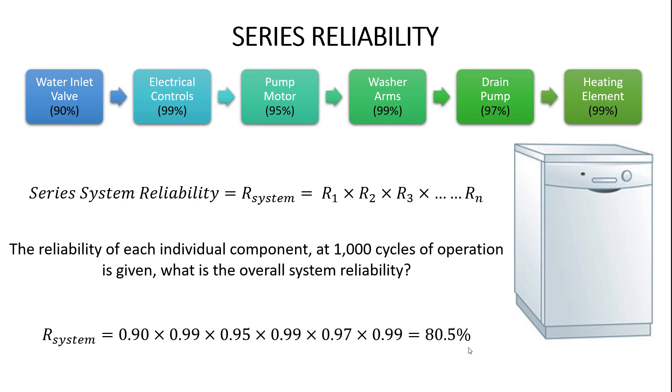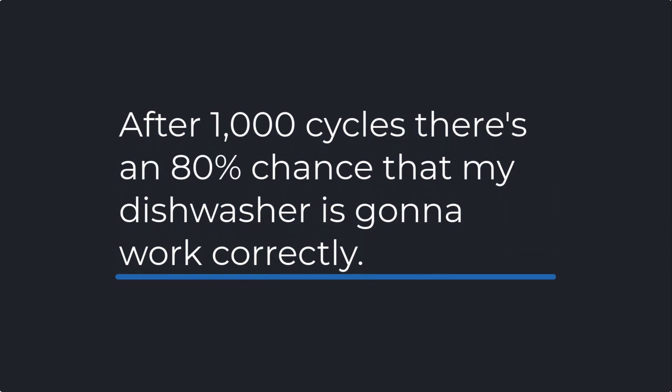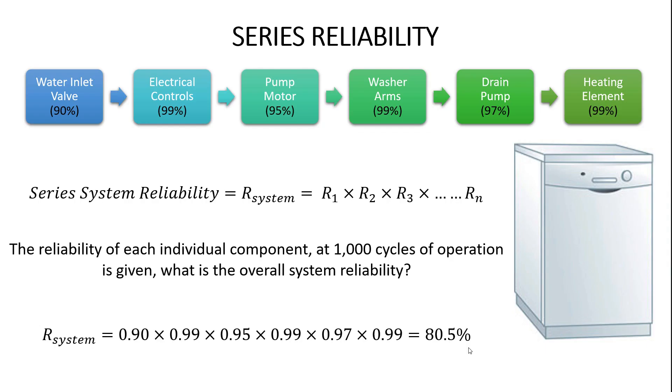And you can interpret that value in two ways. If you have a dishwasher at home, you can interpret this as a big picture. If we're an organization, and we've produced a million dishwashers, 80% of them will still be operational after 1000 cycles.